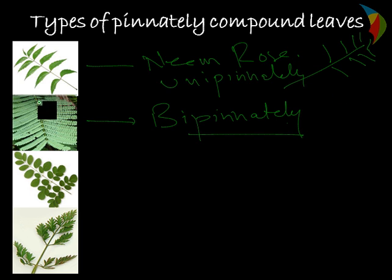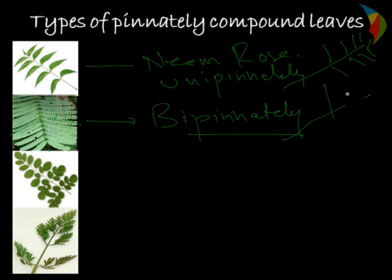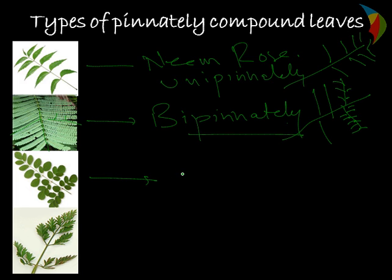In the case of bipinnate leaves, there is a midrib and a leaf is coming out from it, and again there are leaves coming out from there. The rachis is there and again small split leaves are there on both sides of the rachis. So this is called bipinnately compound. The same way, the third type is called tripinnate.